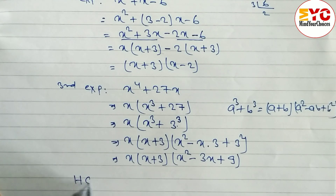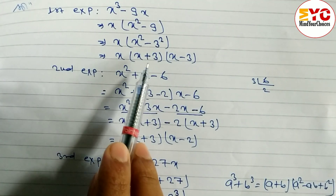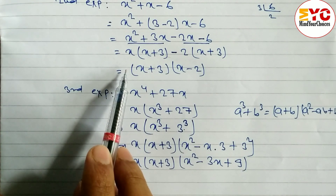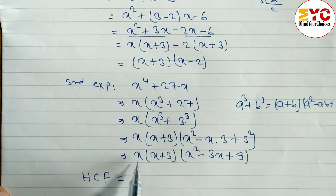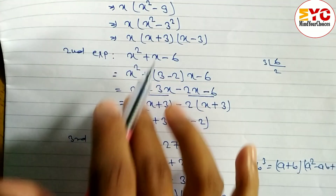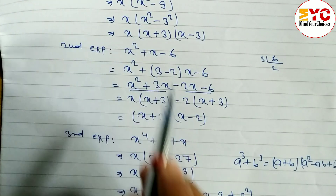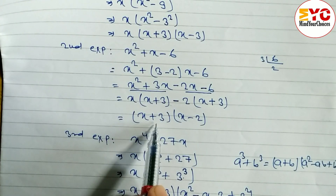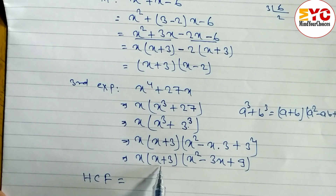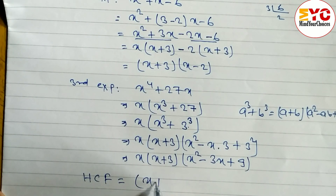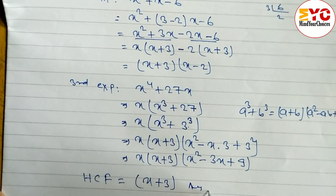After this we have to find out the SCF, which means the common factor. Looking at all three factored expressions: here we have x, but we do not have x in all three, so we cannot take x common. However, x plus three appears in the first, second, and third expressions. So the SCF is x plus three.